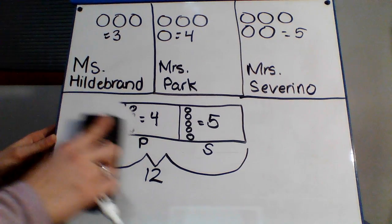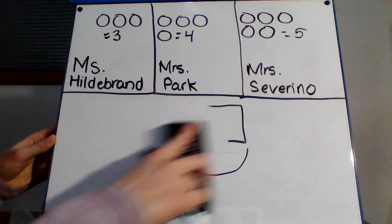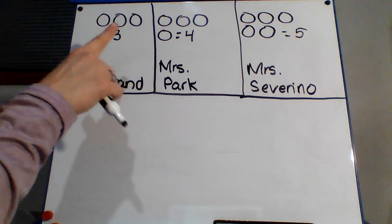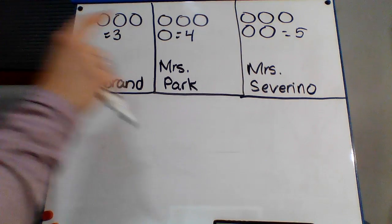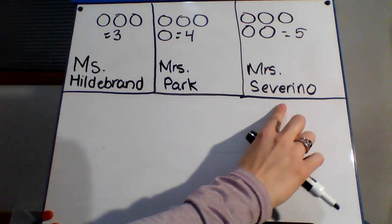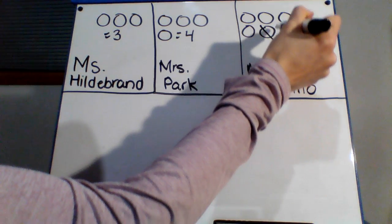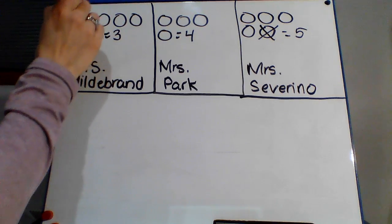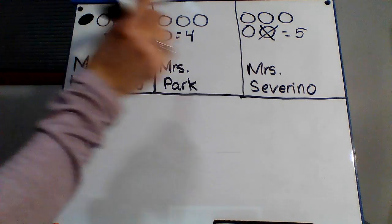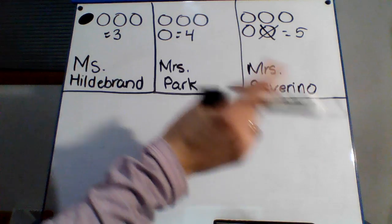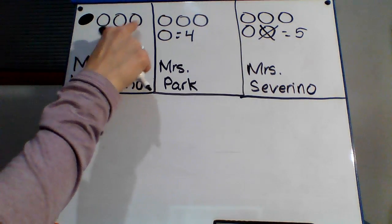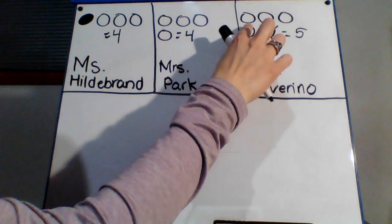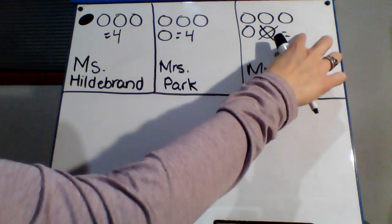Well, we all know that Miss Hildebrand, Miss Park, and Miss Severino are great at sharing. So one thing, if you look up here, that we could do is the lovely Miss Severino could share one with Miss Hildebrand, and I'll color it in a different color so you know that Miss Severino shared. So that would make sure, now Miss Hildebrand has four, Miss Park has four, and Miss Severino has four.